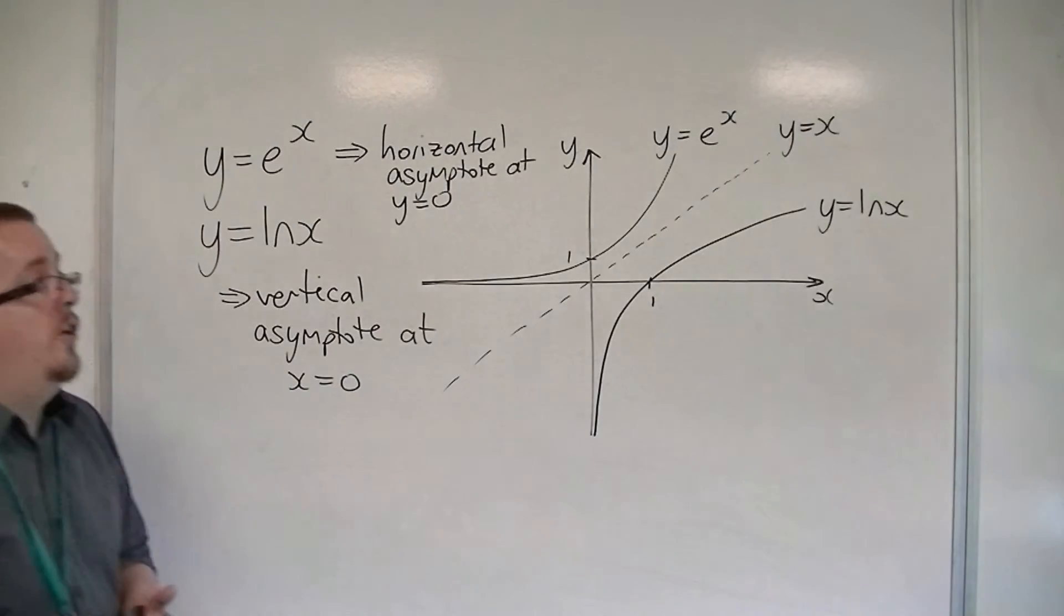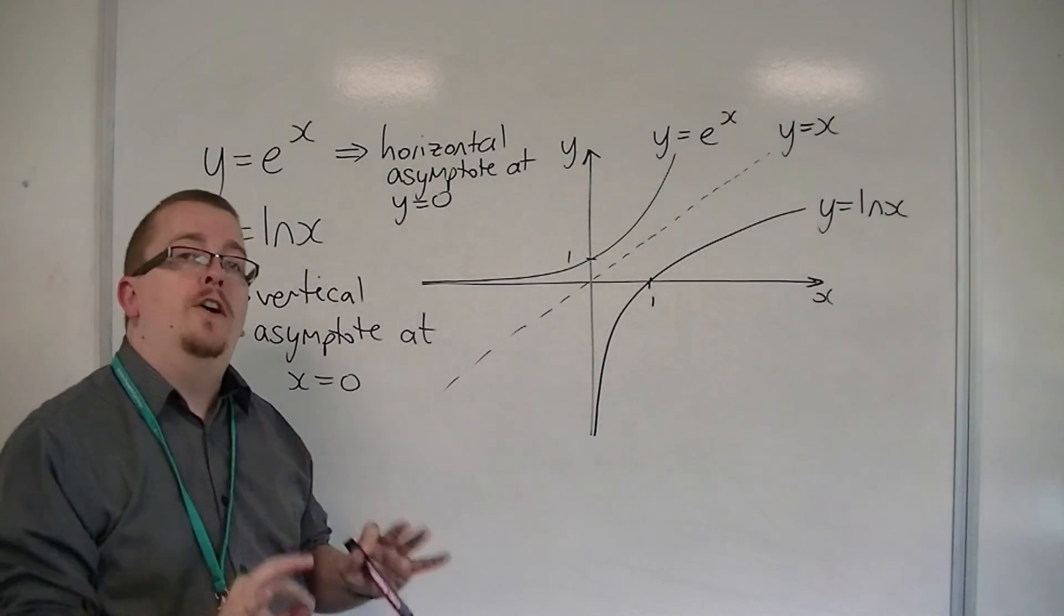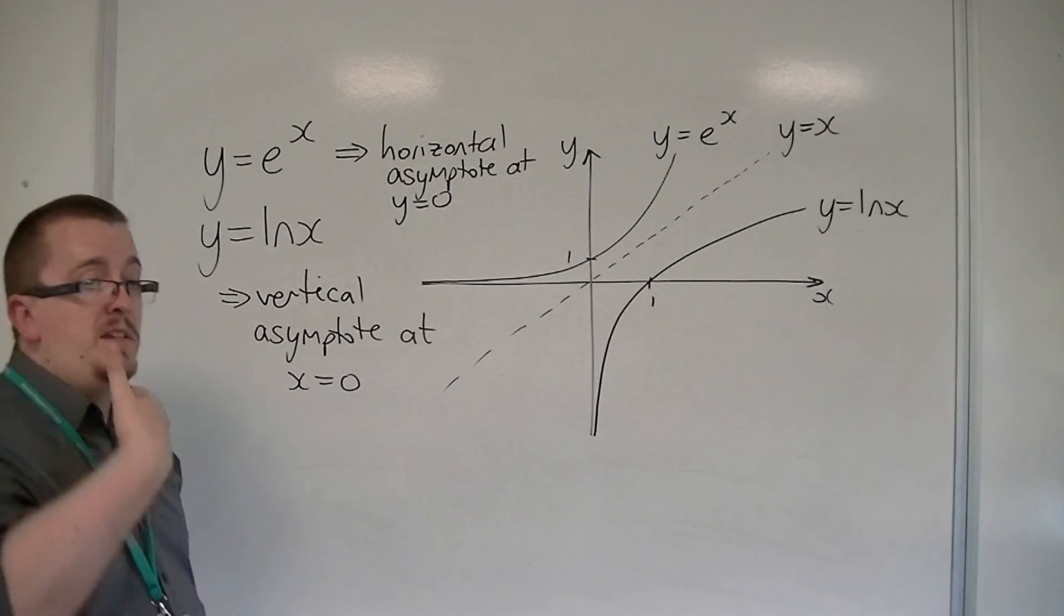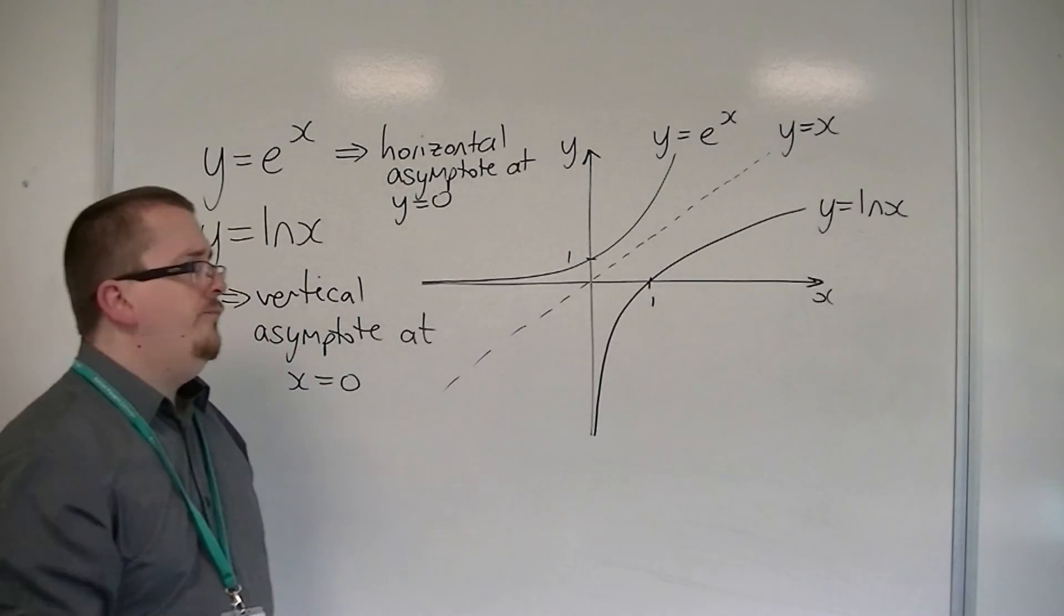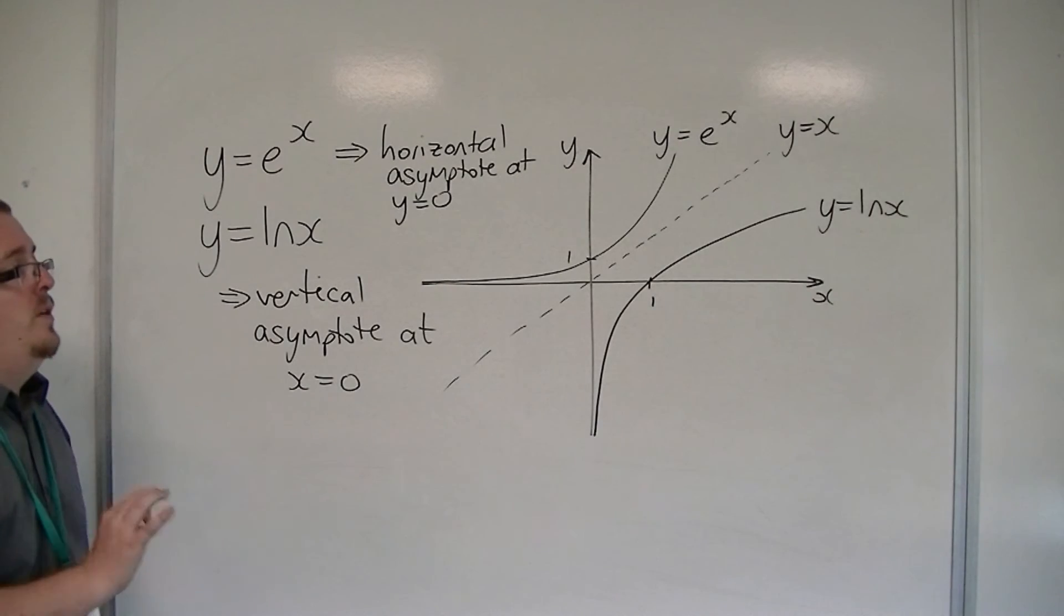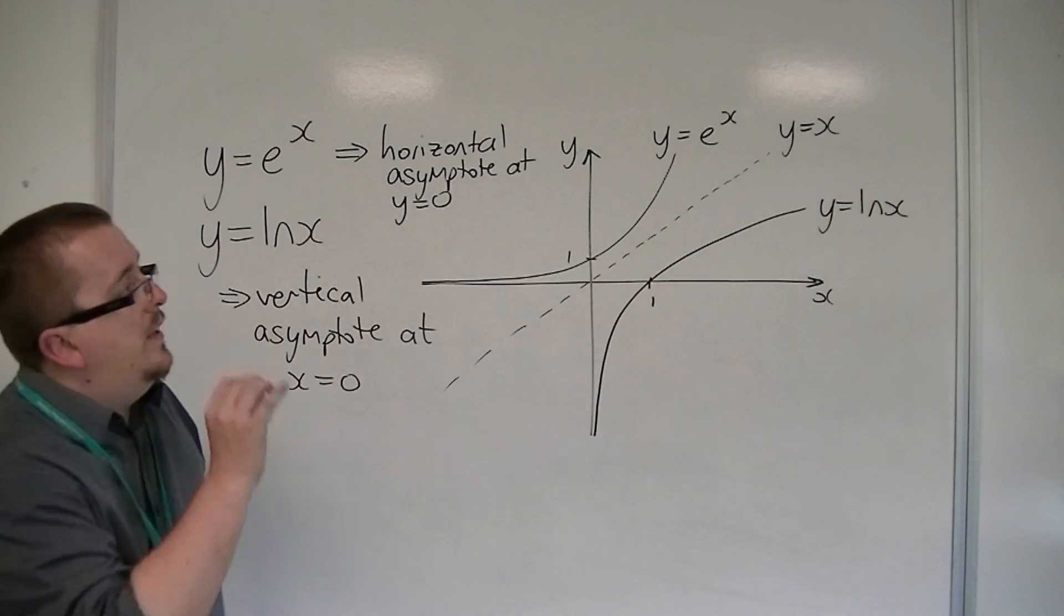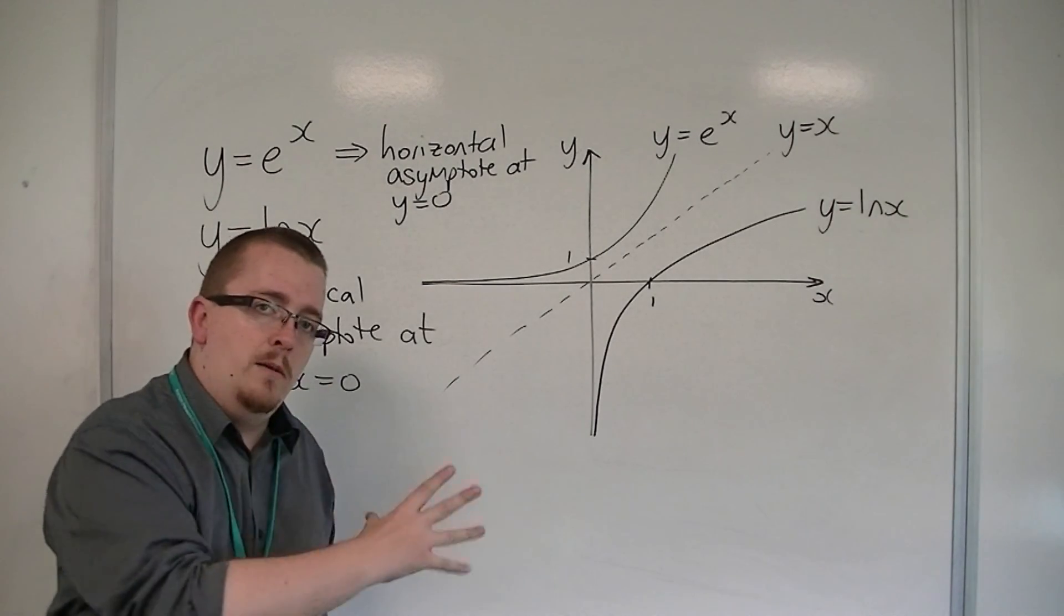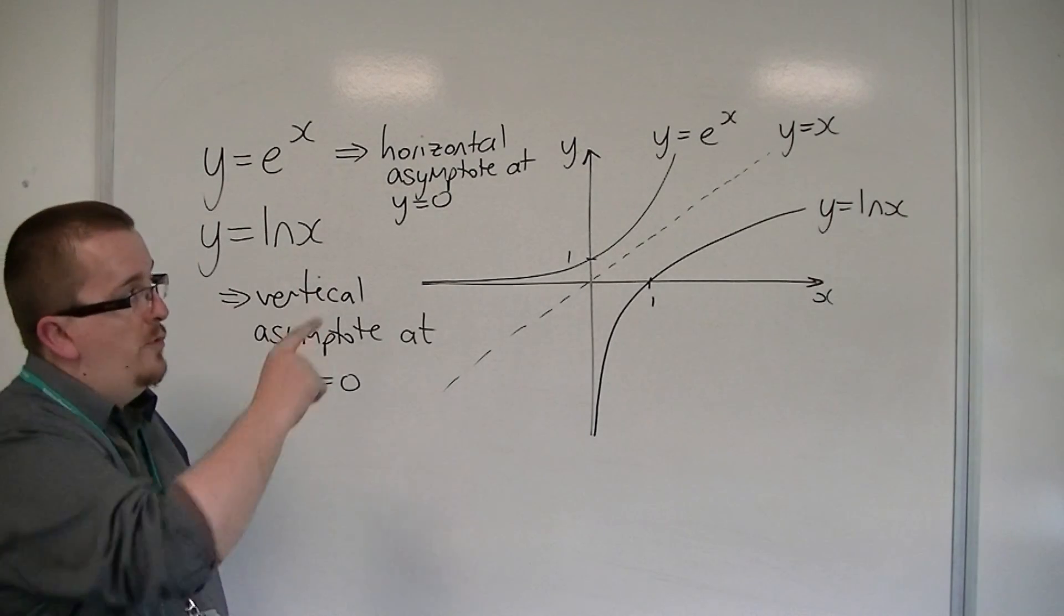This is because they are known as inverse functions of one another. Now, inverse functions is something that we're going to be studying later on, OK? But it's useful to point out at this stage that they are inverse functions of one another, and that is why they look similar, but are mirror reflections of each other through that line.